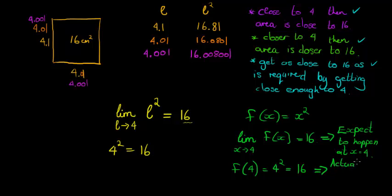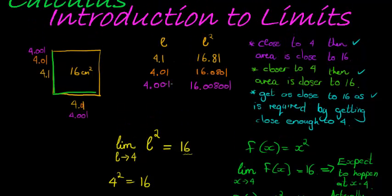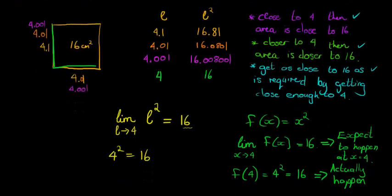What I mean to say is: let's say you didn't know that 4 times 4 equals 16, but you see this table — you see that as the side length gets closer to 4, the area gets closer to 16. You can conclude that what you would expect to happen is that when we're at 4, the area would be at 16. In this case, that's actually what happens. Now let's look at an example where that does not happen.